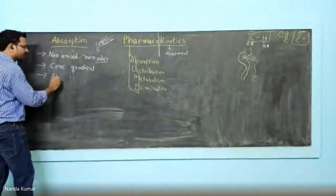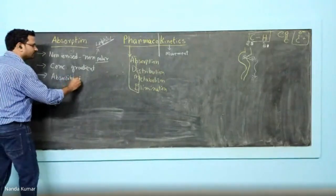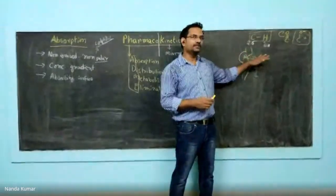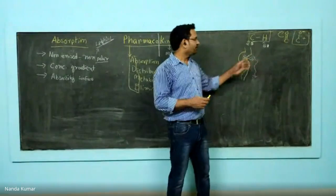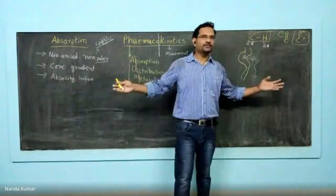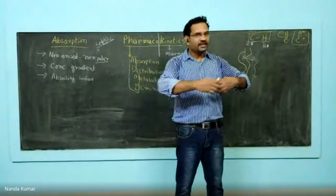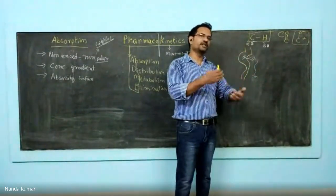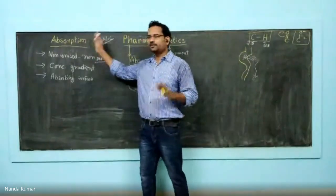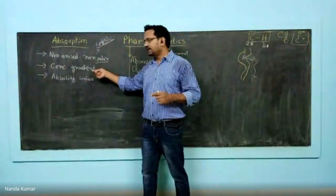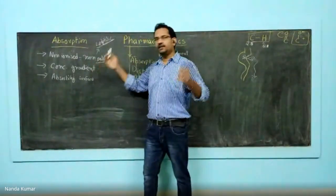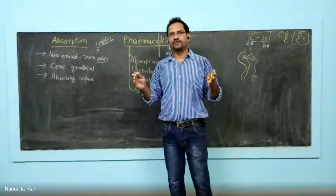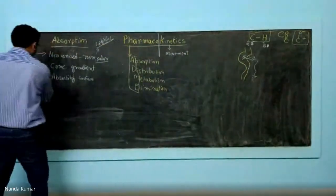The third factor is absorbing surface area. If there is a high surface area, drugs can easily be absorbed; with low surface area, low absorption occurs. Comparing stomach and intestine, the intestine has large surface area, so drugs are easily absorbed there, whereas the stomach has smaller surfaces. So surface area determines how much drug gets absorbed. To summarize: drug should be non-polar, absorbed via concentration gradient, and the absorbing surface area should be large.